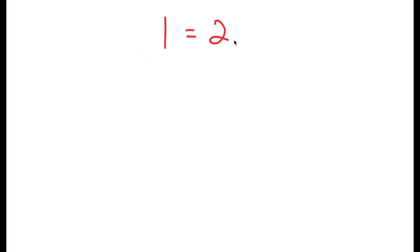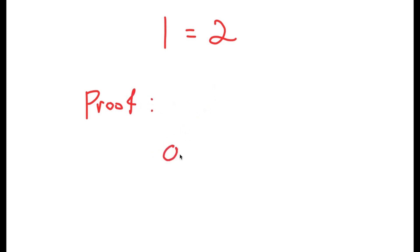So in this video, I'm going to prove to you guys that 1 is equal to 2. For the proof, I'm going to first start with a variable a, and I'm going to let this variable a equal to another variable b. So all we're doing is saying we made two variables and we're saying that they're equal to each other.